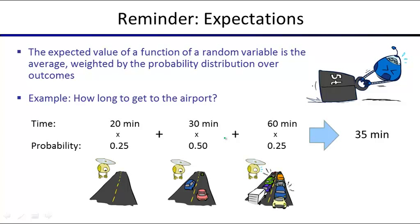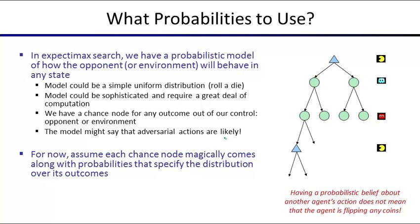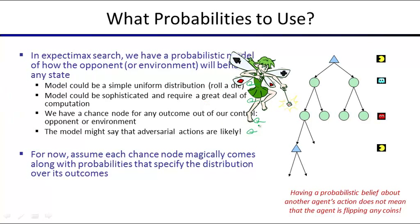What probabilities are we going to use? In expectimax search, if the tree is annotated, great. But in practice you need to model something from the real world. If it's a roll of a die, maybe you have a uniform distribution. Often it's more complicated — you might be modeling a person and their typical choices. It could be a chance node modeled by the environment or by an opponent who is mostly adversarial but sometimes makes a random action. For the remainder of today's lecture, we assume the probability fairy gives them to us.